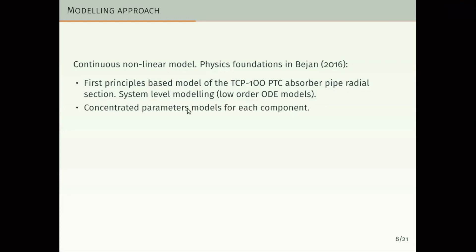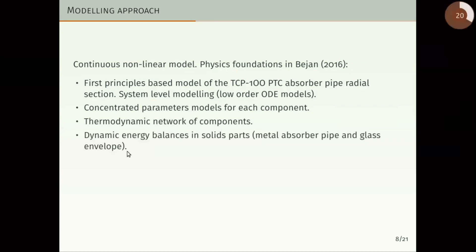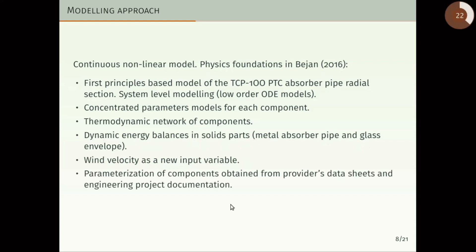We obtain concentrated parameter models for each component, and finally we form a thermodynamic network of components. Some of those components state dynamic energy balances in solid parts, for example, metal absorber pipe and glass envelope. Wind velocity has been a new input variable introduced in this model. The parameterization of the components is obtained from provider's datasheet and engineering project documentation until we get experimental data from the TCP research facility.